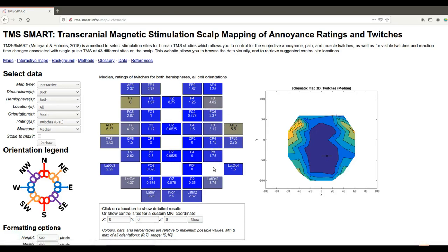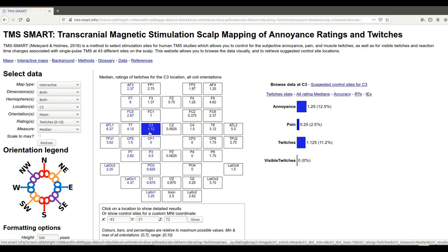So I'm going to give you an example of how you can use this website to control for your primary experimental site of interest and we're going to choose C3. C3 is pretty much directly above the hand area of the primary somatosensory cortex so it's a good site to look at touch and somatosensory processing using TMS.